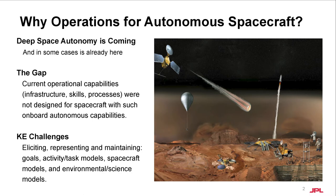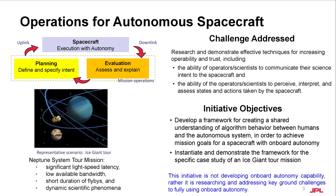In this work, we study the specific knowledge engineering challenges on ground operations from the uplink and downlink perspectives. On the planning or uplink side, we focus on the ability of scientists, engineers, and operators to capture, specify, and communicate their intent and also predict the possible outcomes. On the evaluation or downlink side, we focus on their ability to perceive, interpret, and assess spacecraft state and actions taken by the onboard autonomy for the next uplink cycle.